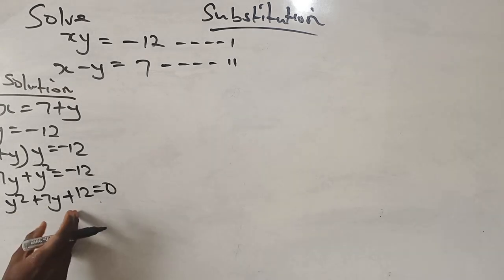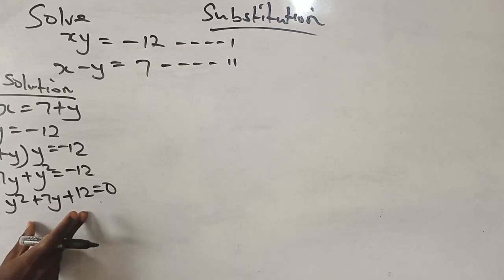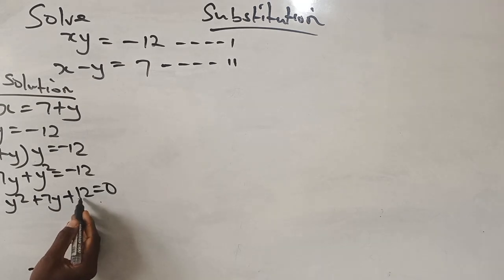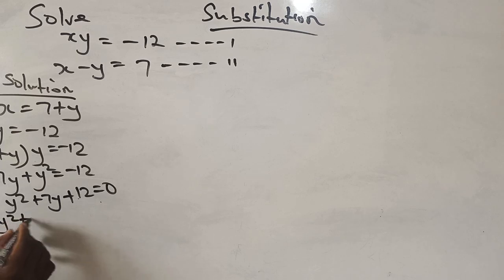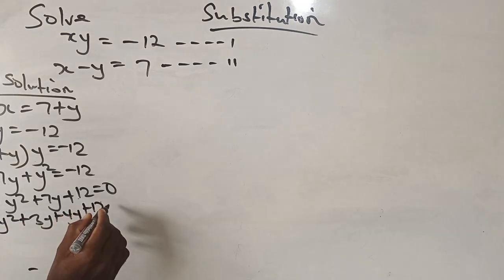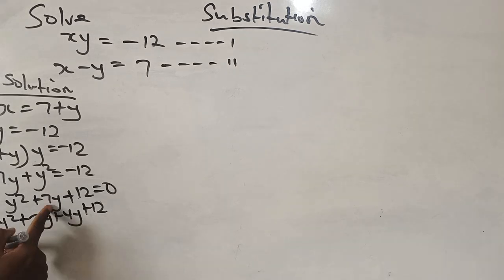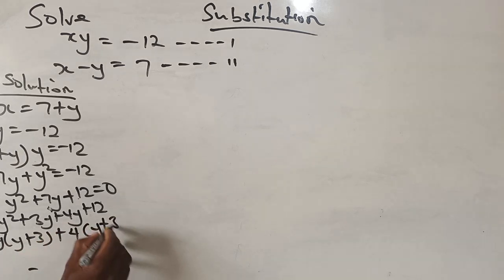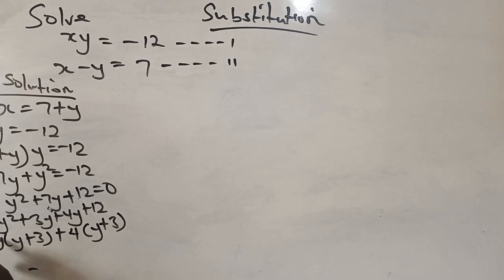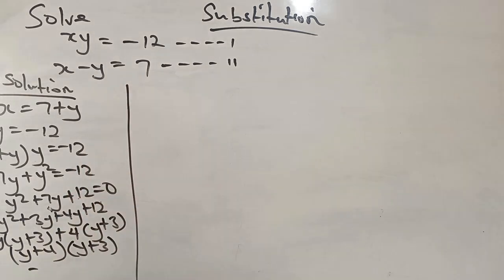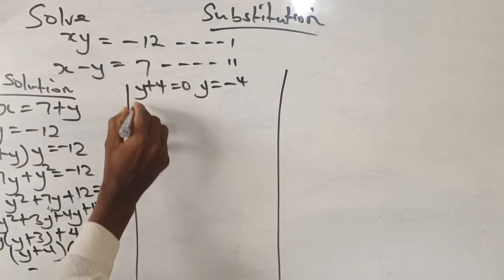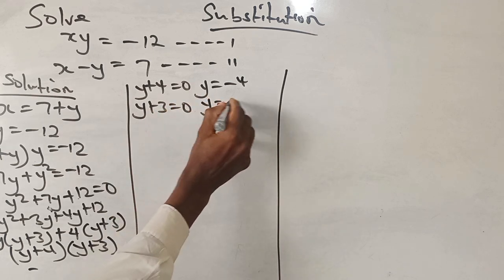We can use either the factorization method or the formula method to find y. Using factorization, I use 4 and 3: 4 times 3 is 12, and when added they give 7y. So: y squared plus 3y plus 4y plus 12, which factorizes to y(y + 3) plus 4(y + 3), giving (y + 4)(y + 3) equals 0. Therefore y plus 4 equals 0 gives y equals minus 4, and y plus 3 equals 0 gives y equals minus 3.